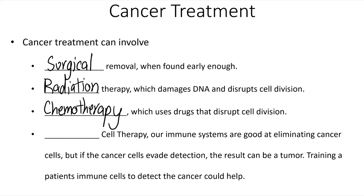More recently, immune cell therapies have also become an effective treatment. Our immune system is actually really good at finding and eliminating cancer cells before they become tumors. It's only the cancer cells that somehow evade detection by our immune system that are able to grow into tumors. If we can train a patient's immune cells to recognize these cancers and eliminate them, that is another effective form of cancer treatment.